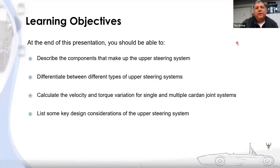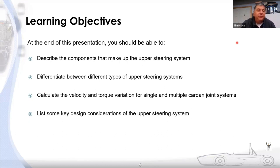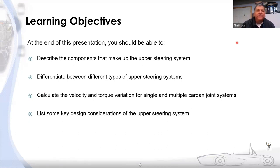At the end of this presentation, we should be able to describe the components that make up the upper steering system and differentiate between different types. There's some math involved — we'll give you equations to calculate the velocity and torque variation for single and multiple cardan joint systems. We'll also list some other key design considerations for the upper steering system.